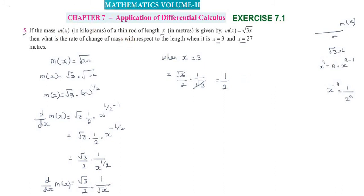When x = 27, we have (√3/2) · (1/√27). Now √27 = √(9·3) = 3√3. So this becomes (√3/2) · (1/(3√3)). The √3 cancels, leaving 1/(2·3) = 1/6 kilogram per meter.